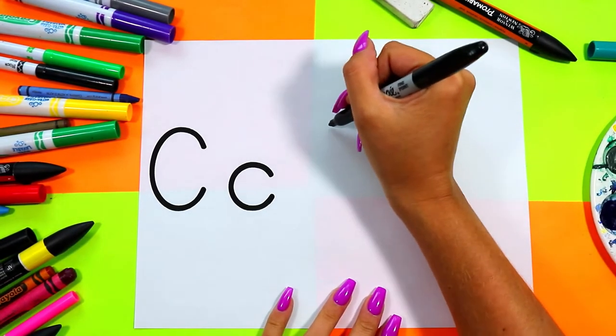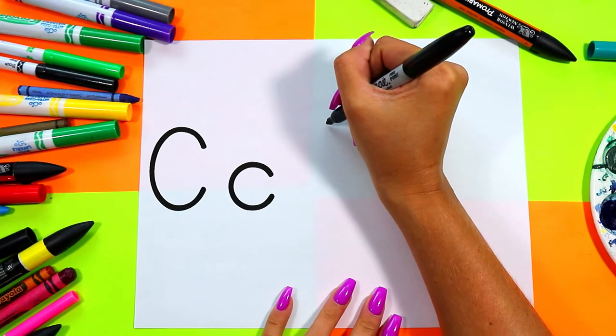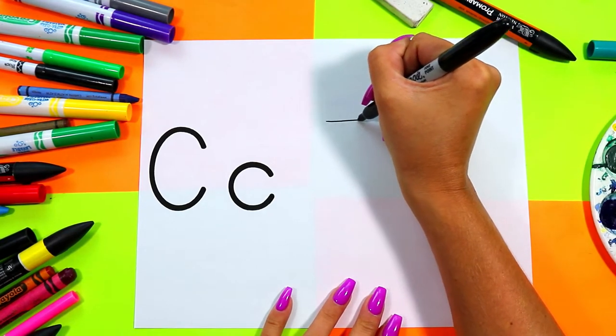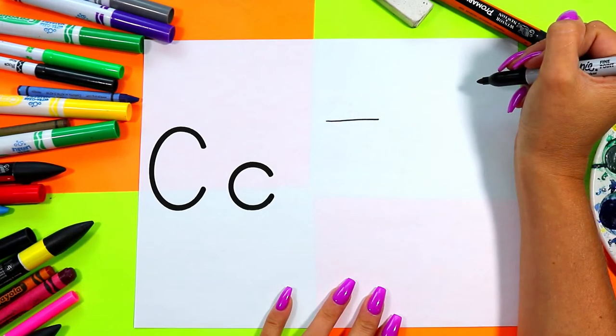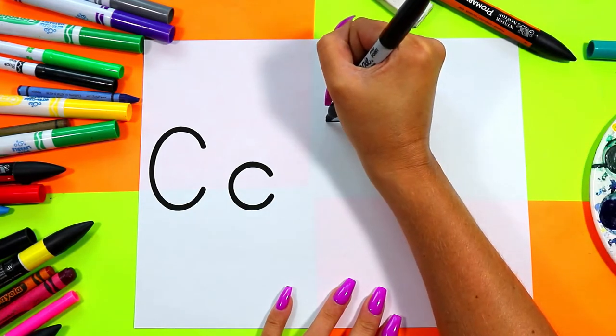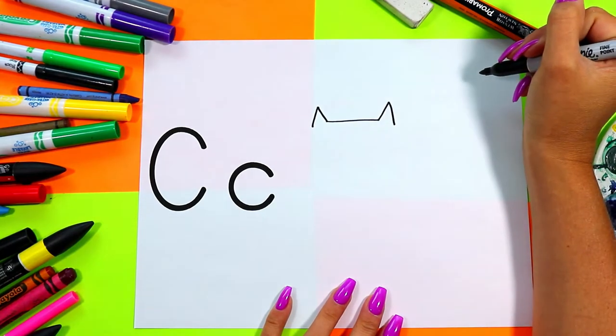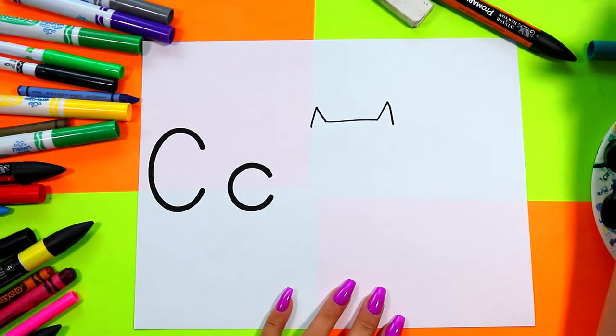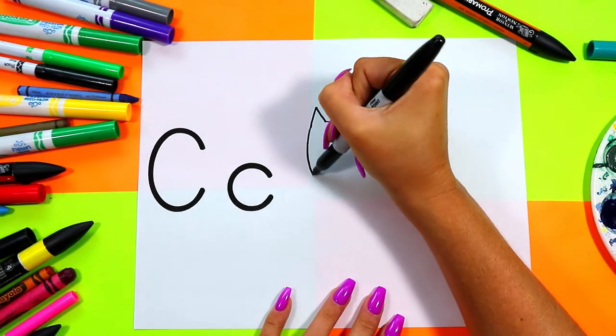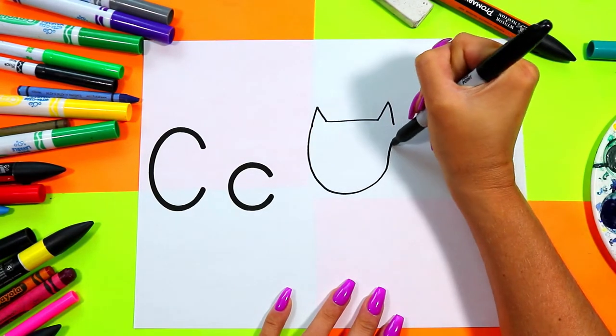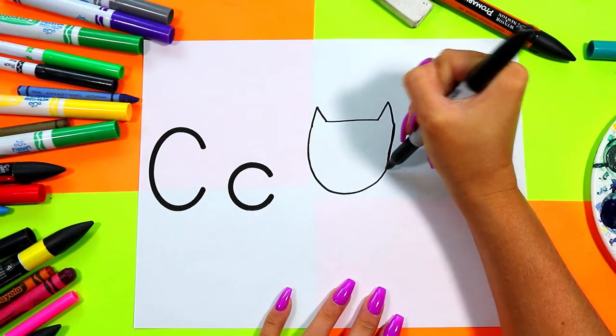So we're going to draw a cat. First we're going to draw a straight line for cat's head and two triangles at the top for cat's ears. Draw a big curving line for the bottom of cat's head.